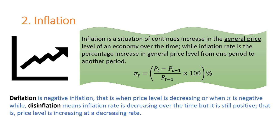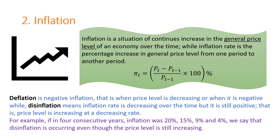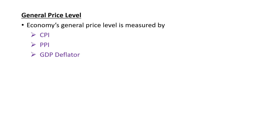For example, in four consecutive years, if the inflation was 20%, 15%, 9%, and 4% respectively, we say that disinflation is occurring even though the price level is still increasing. The general price level is a number that represents prices of all the goods in an economy. The economy's general price level is measured by the consumer price index, producer price index, or GDP deflator.